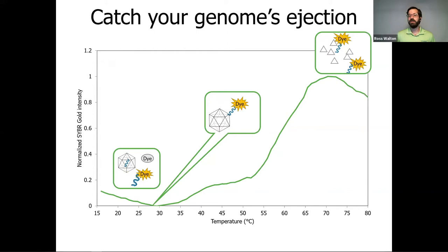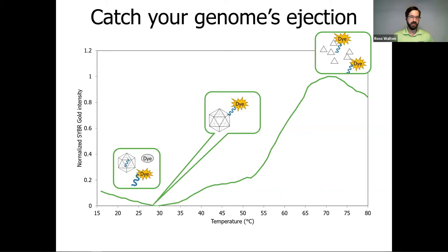Looking more in depth at how UNCLE detects genome ejection: at the start of an experiment, you have intact capsids containing DNA, free unbound dye, and dye bound to a small amount of free DNA in the sample. When you start heating, the capsids begin to eject their genomes, the unbound dye binds to the ejected DNA, and the fluorescence increases steadily during the thermal ramp until it reaches a maximum at about 70 degrees Celsius when all capsids have broken apart and all DNA is available for dye binding. By looking at the midpoint or inflection point in these slopes, we determine a Tm of genome ejection.